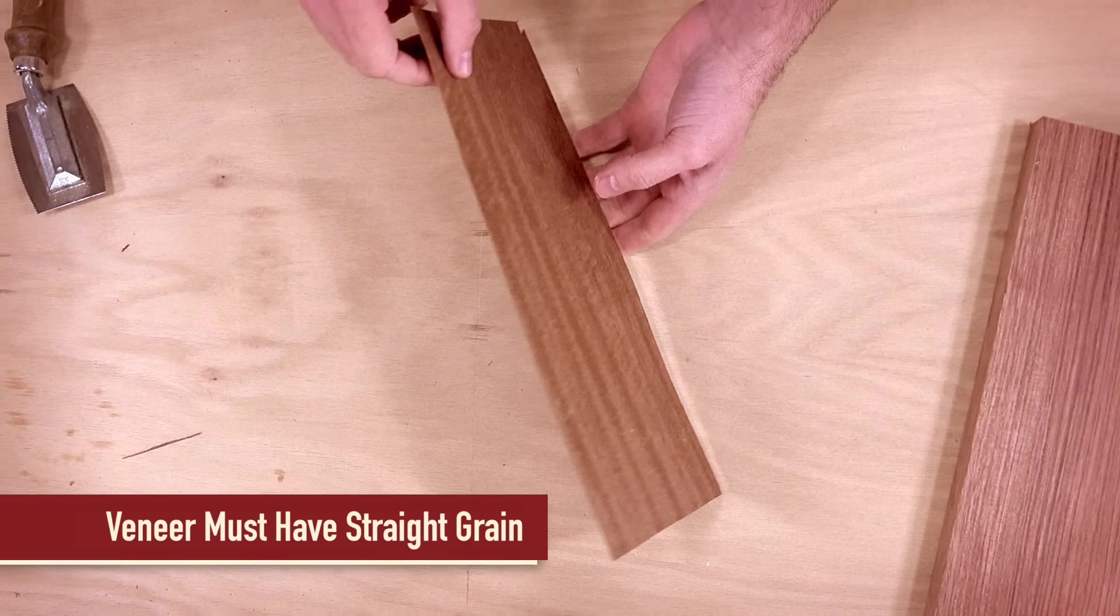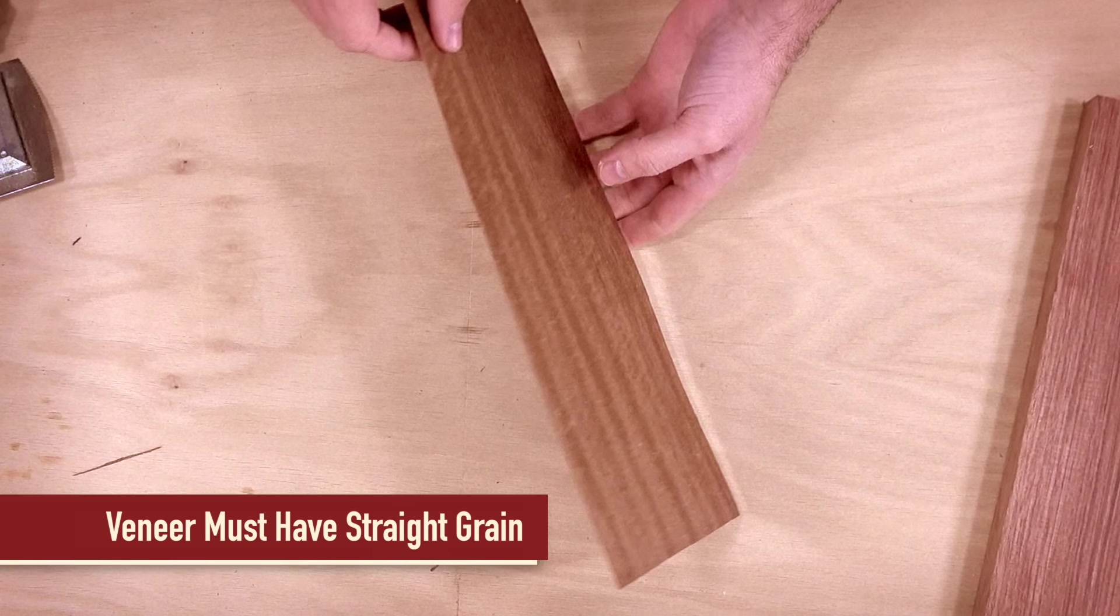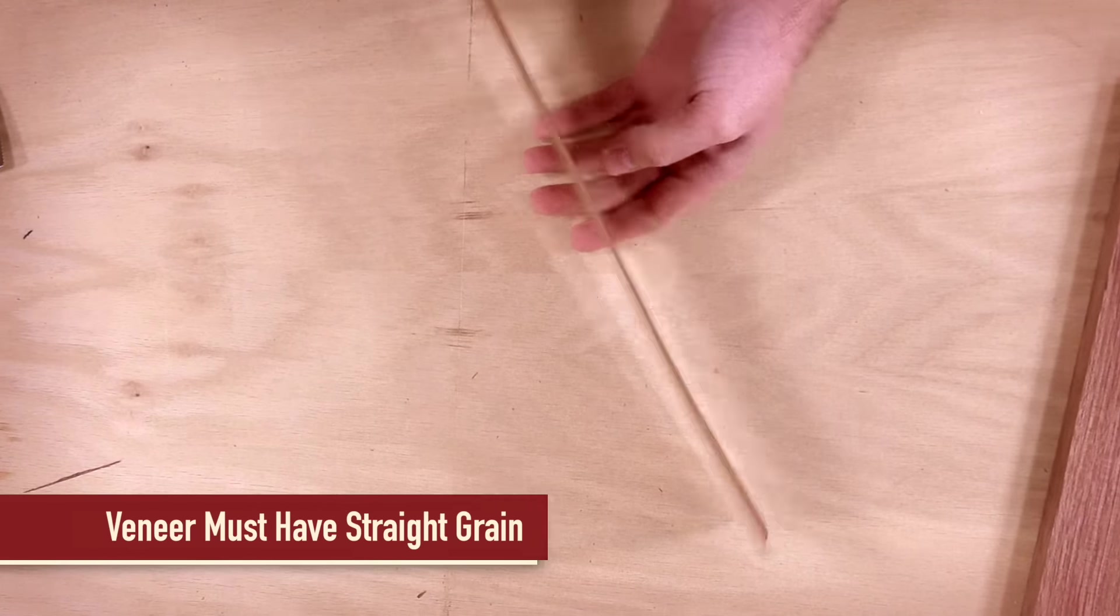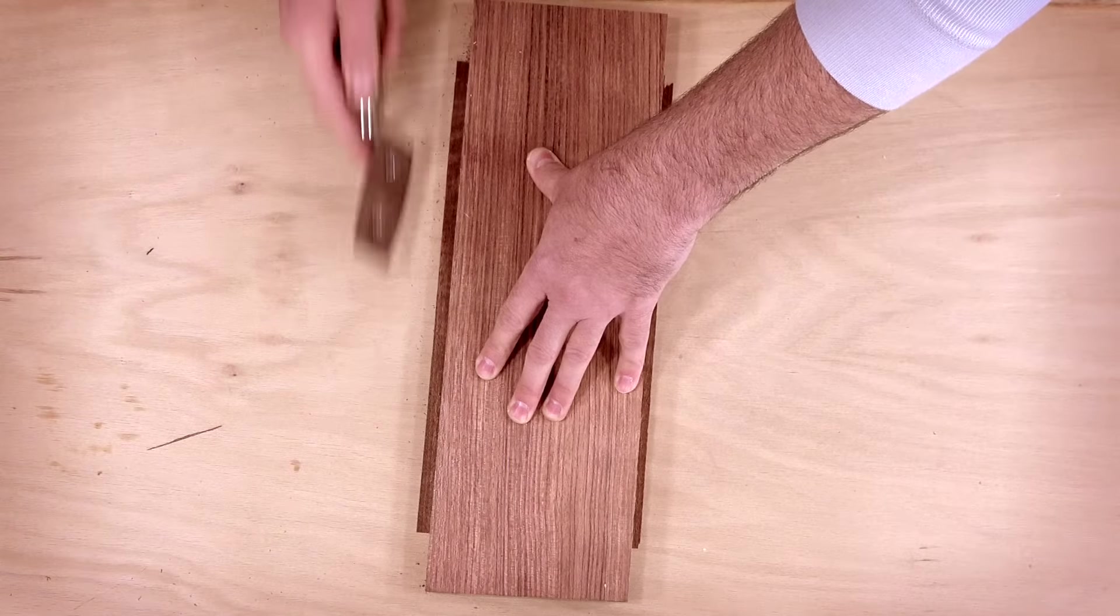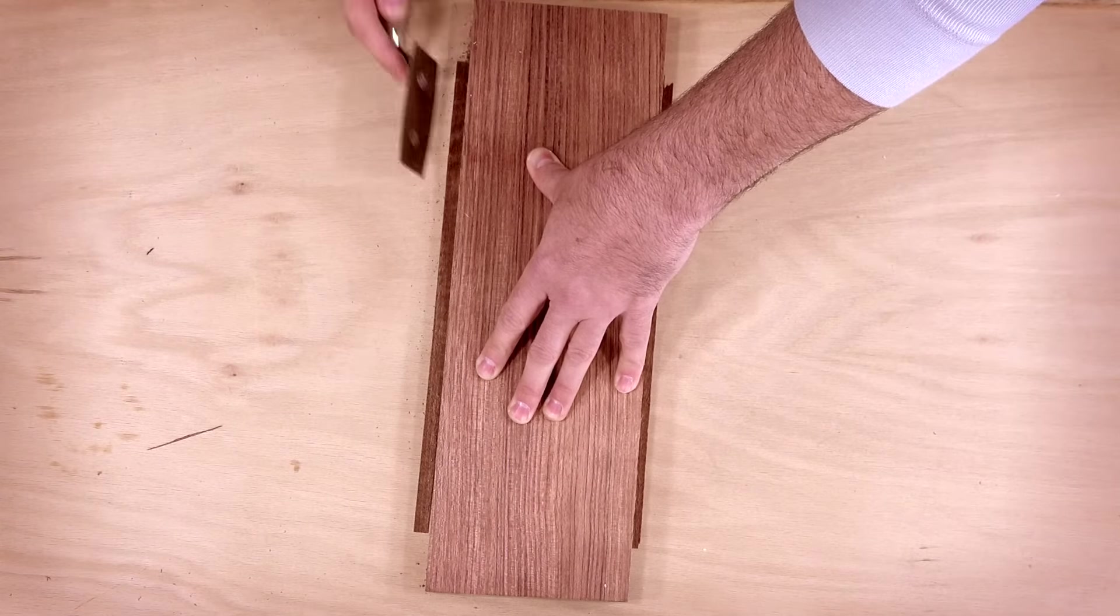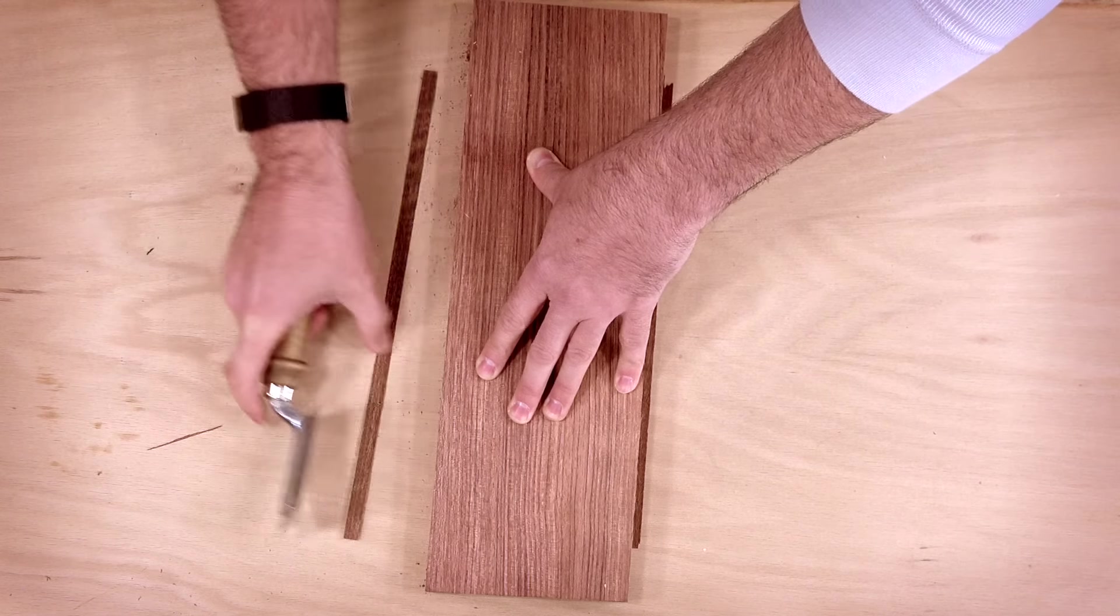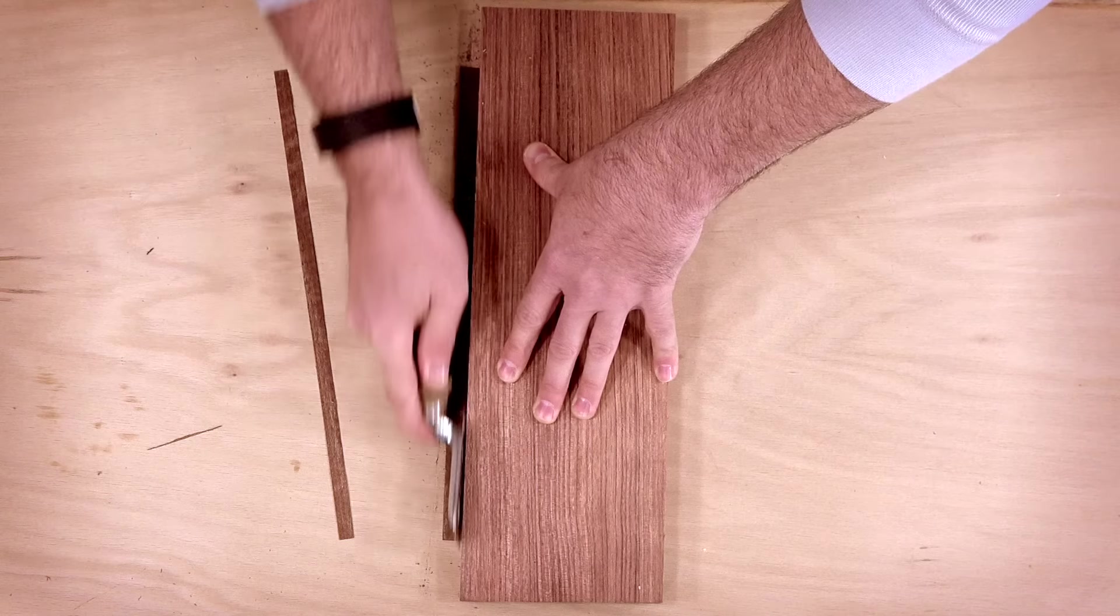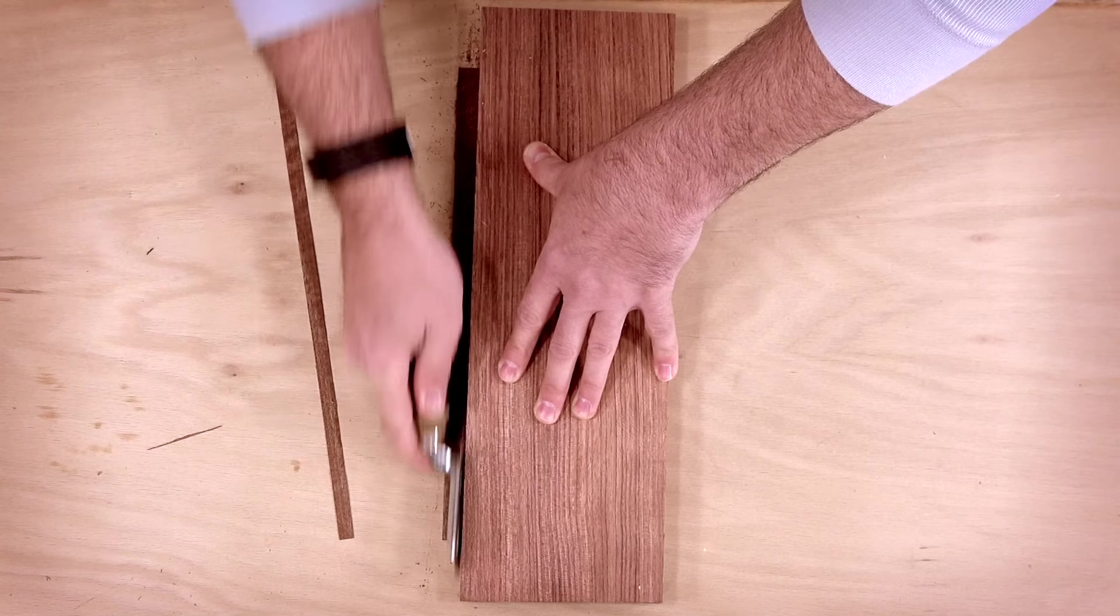Let's get started. First, you'll need to start off with thin veneer with very straight grain. Wavy grain will chip and break during the bending process. I'm using a scrap board with a veneer saw to cut some thin strips. This could also be done with a utility or an X-Acto knife.